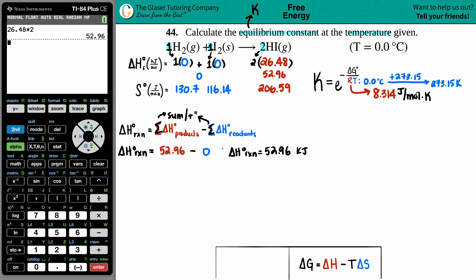Delta H for the whole entire reaction equals the sum of the products, so 52.96 minus the sum of their reactants, which is zero. So delta H for the whole reaction is just going to be 52.96 kilojoules.